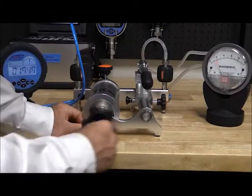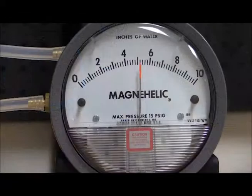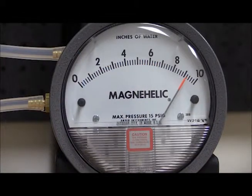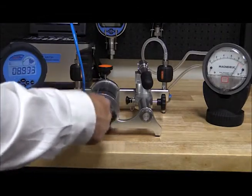Now we are ready to generate the pressure and record our results. Typically, three to five points are taken, both ascending and descending. By taking more than two points, we are able to check the gauge's linearity and hysteresis.